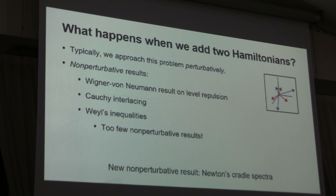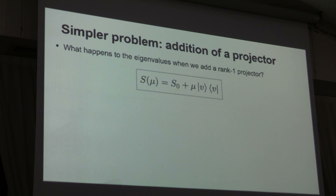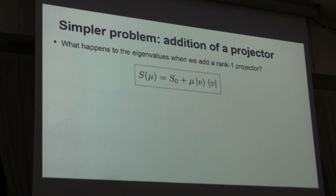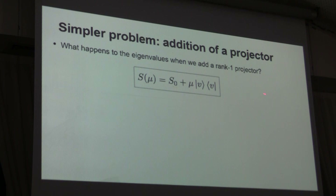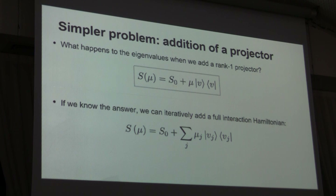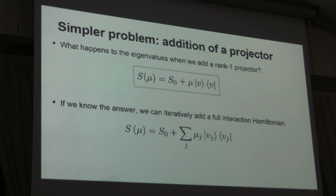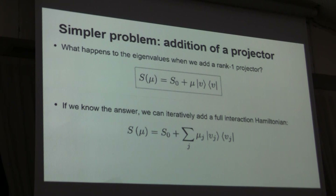What we do here is simplify the problem by, instead of adding a full interaction Hamiltonian to our free Hamiltonian, we add a rank-one projector to it — a rank-one projector multiplied by a real number mu, the coupling constant. If we know what happens to the eigenvalues and eigenvectors when we add a rank-one projector, we can iteratively build a full interaction Hamiltonian by adding projectors one by one. So let's solve this problem.